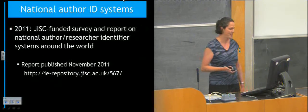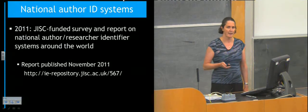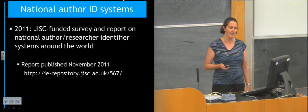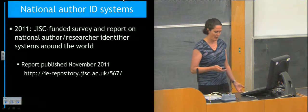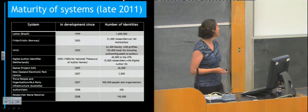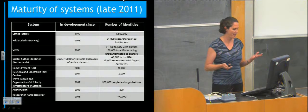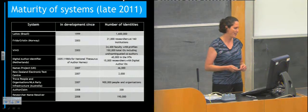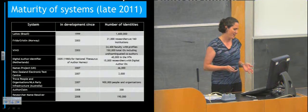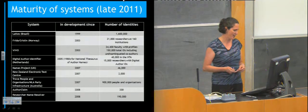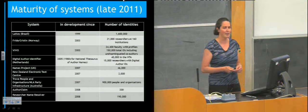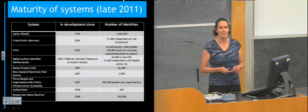What might these other systems be? There are a number of national identifier systems out there. At the end of last year, our project did a survey and a report on some of the existing approaches to name identification at the national level to see what was out there and what we might learn from those systems. We sent out a survey to a lot of different national organisations. Just to give you an idea of the timescale — the oldest one we looked at was the Lattes system from Brazil, which has been in existence since 1999. It's a very mature system; looking at the number of identities covered, 1.6 million — it's huge.